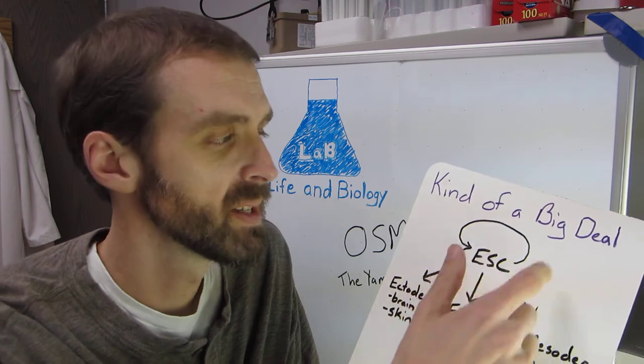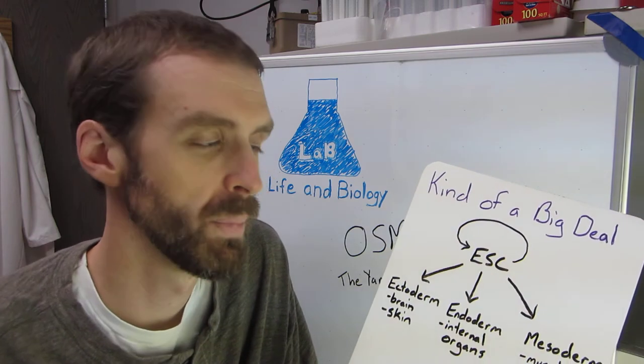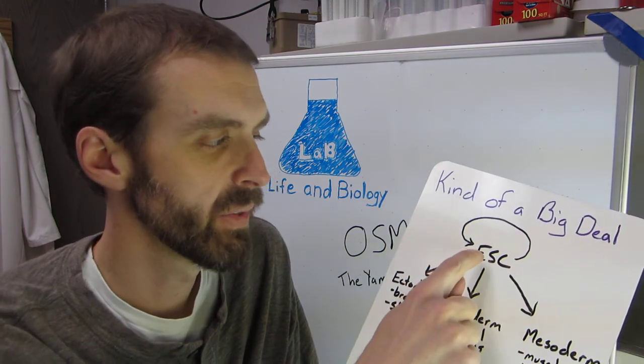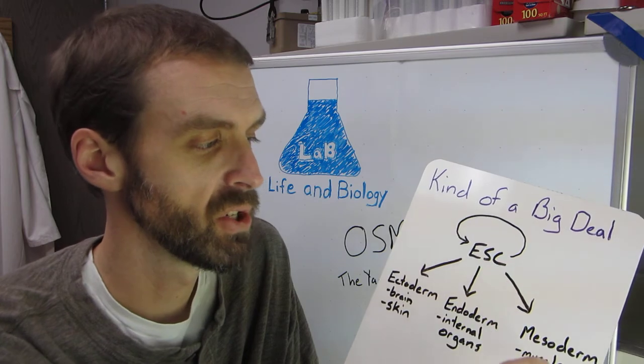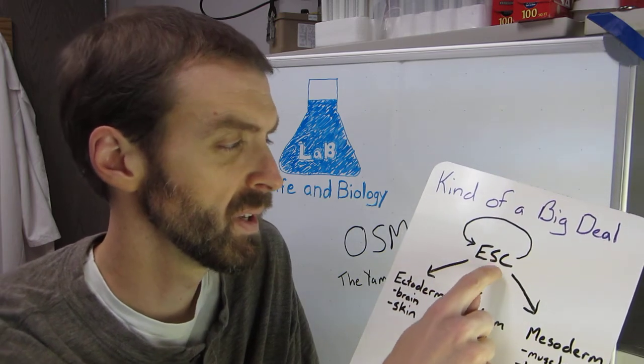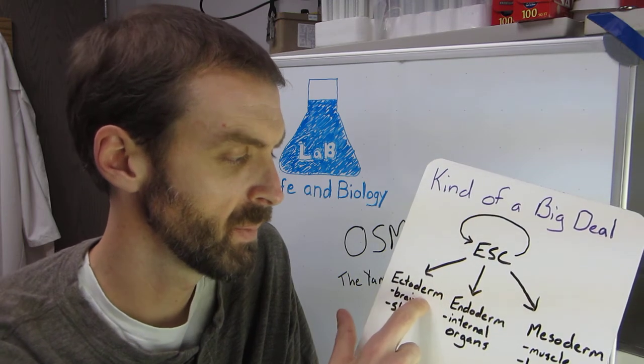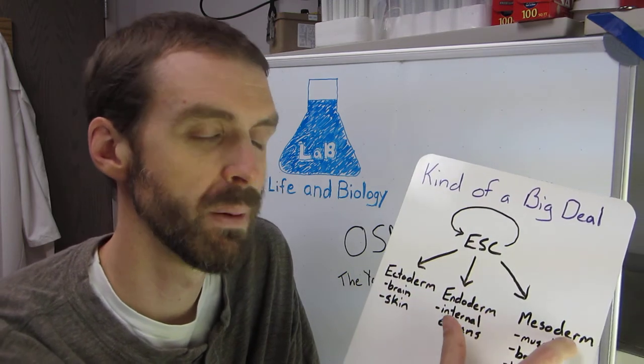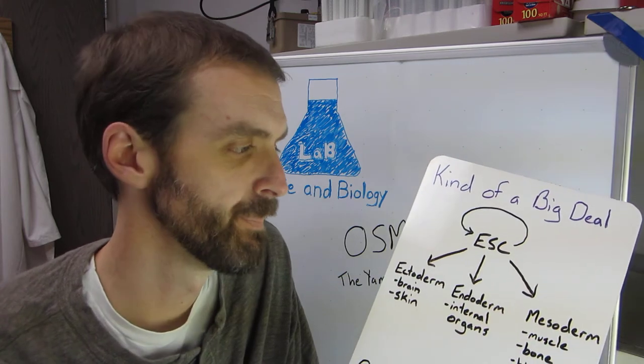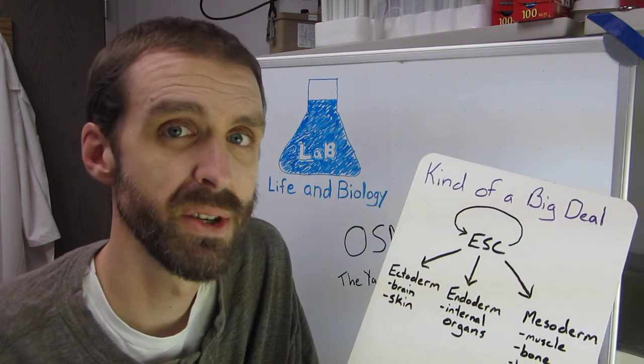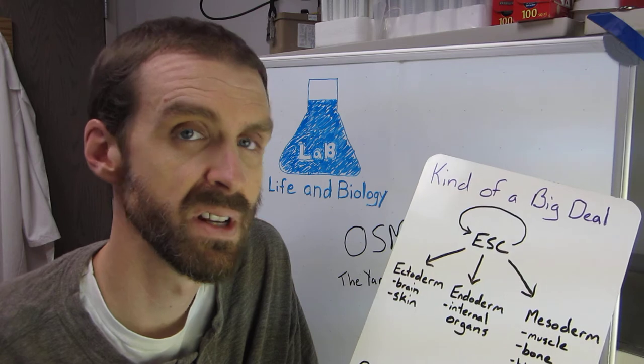So one thing that they can do is they can self-renew and make more embryonic stem cells. The other thing they can do is called differentiation. And so when an embryonic stem cell differentiates, it can become ectoderm, endoderm, or mesoderm, which are different types of tissue found during embryogenesis.